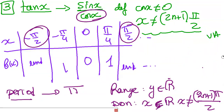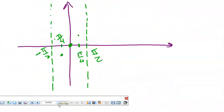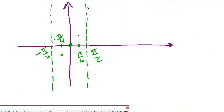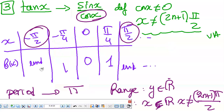The range of tangent is all reals. The domain is all reals x, with x not equal to (2n+1)π/2. To draw tangent x, first draw the vertical asymptotes at -π/2 and π/2. Then I have three particular points: at x = -π/4, tangent = -1; at x = 0, tangent = 0; at x = π/4, tangent = 1.